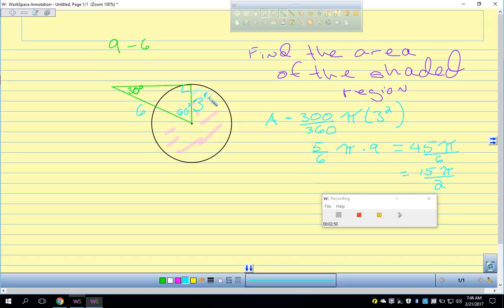15 pi over 2, whatever the units, maybe it's inches. If it were in inches, then this would be inches squared. And then if they ask you for an approximate answer, you plug that into your calculator and figure that out. So that's kind of a fun one.